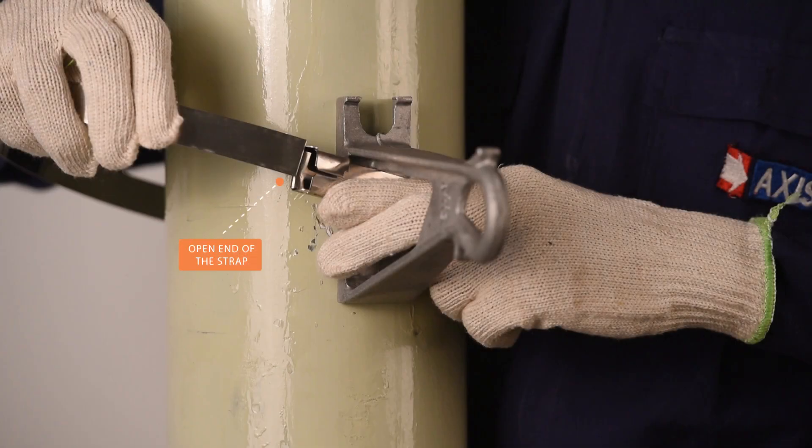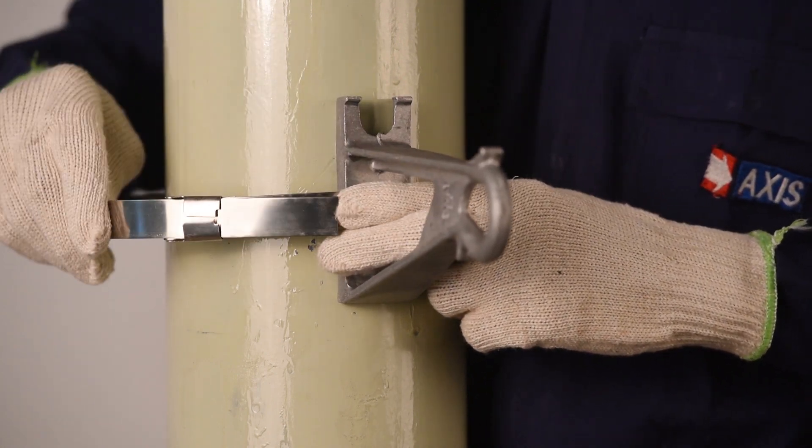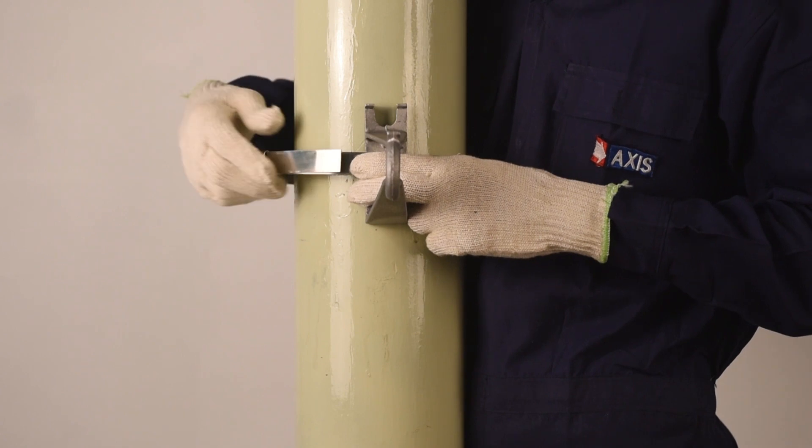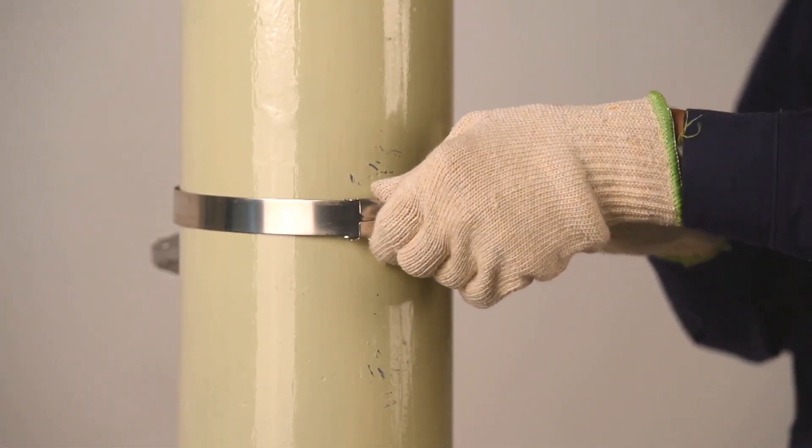Pass the open ends of the strap through the buckle. Locate the bracket on the pole and wrap the strap around them as shown in the video.